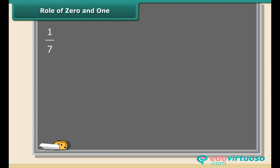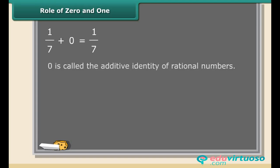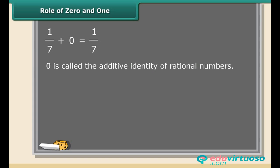Here we have added zero to a rational number. What did you notice? When we add zero to a rational number, the sum is always again a rational number. For this reason, zero is called the additive identity of rational numbers.